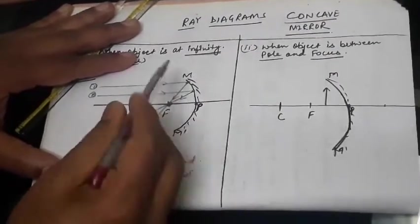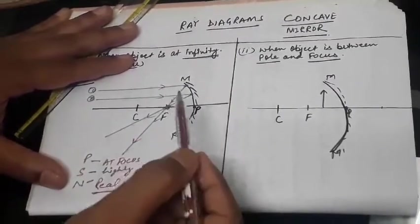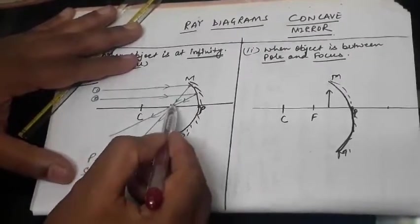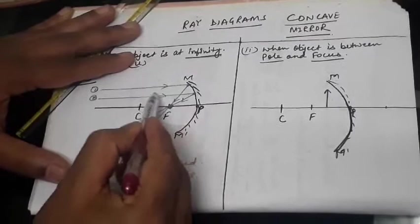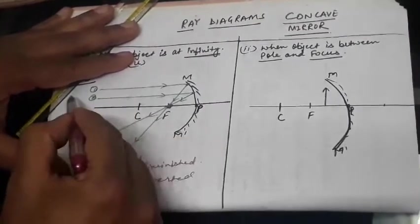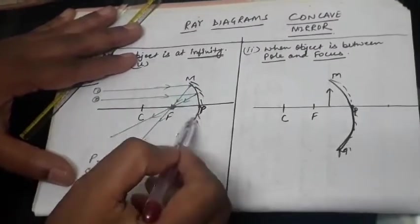This property of concave mirror is also used in automobile headlights, where we keep bulb at focus and the light will go directly on the road. See, this is bulb, light is going on the road. This concave mirror is used inside the headlights of the bulb.